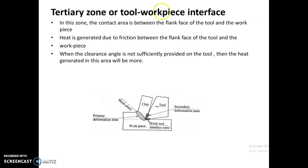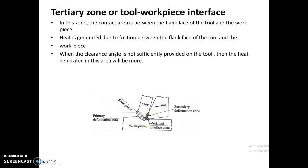The next zone is the tertiary zone, or tool-workpiece interface. This is the zone where the flank face of the tool and the workpiece are in interaction. Heat is generated due to friction between the flank face of the tool and the workpiece. When the clearance angle is not sufficiently provided, the heat generated in this area will be more. This process is called burnishing, where a minute amount of heat is generated due to the interaction between the flank face of the tool and the workpiece.